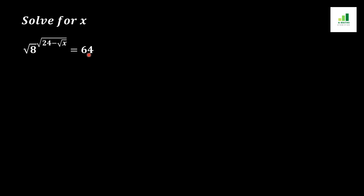First, we convert 8 and 64 into power form. Simply, 8 becomes 8 to the power of one-half, because the square root converts into a power of one-half, which then multiplies with the exponent value. And 64 can be written as 8 squared.